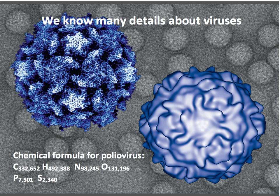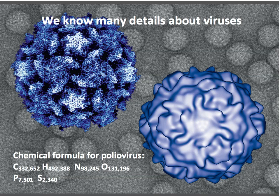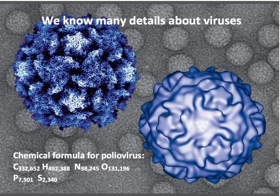Today we know an incredible amount about viruses. We can solve their structures at atomic resolution. Here on the left is the structure of poliovirus at 1.7 angstroms resolution — we can see where every atom is in three dimensions. At about 10 angstroms resolution you see the overall shape of the particle but not individual polypeptide chains. And because we know the genome sequences of many viruses, we can calculate their chemical structures. Here's the chemical formula for poliovirus — probably the most complex chemical you've set eyes on so far.